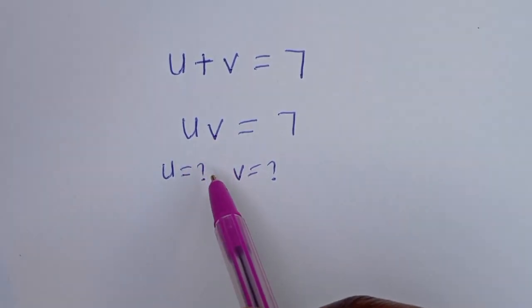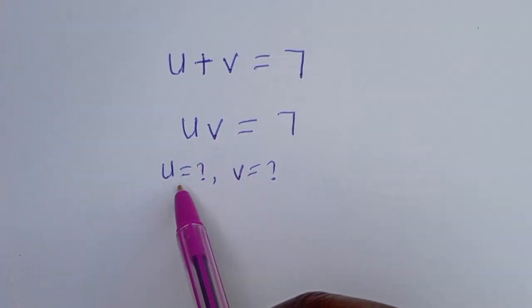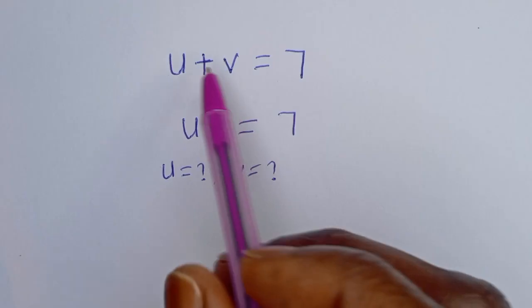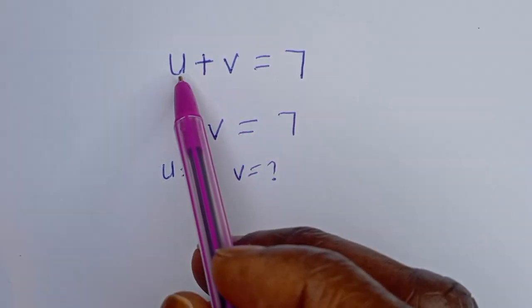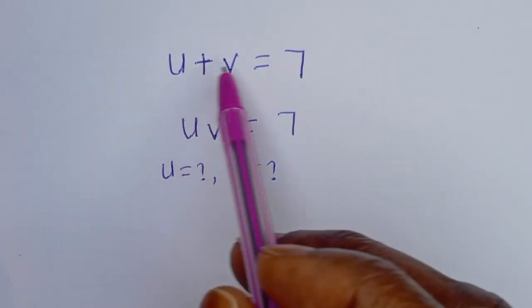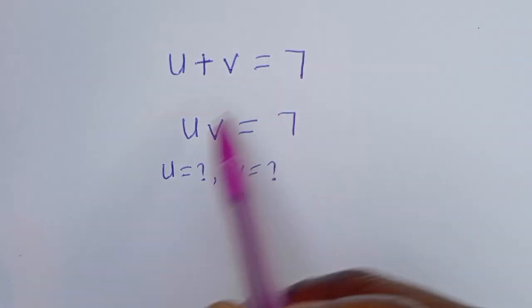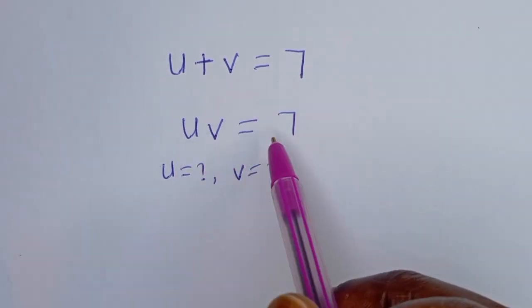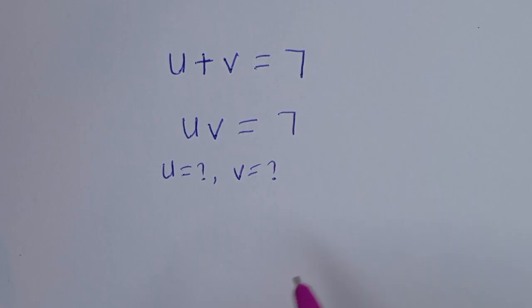Hello, you are welcome. How to solve for u and v in this equation: u plus v is equal to 7, and uv is equal to 7.